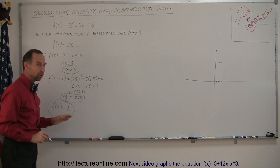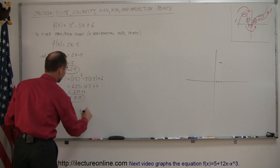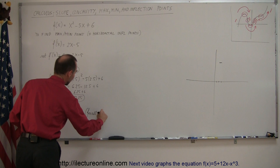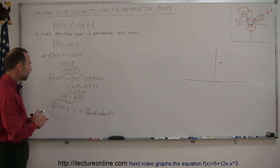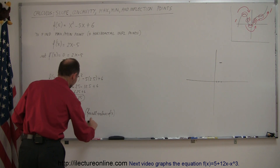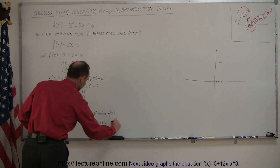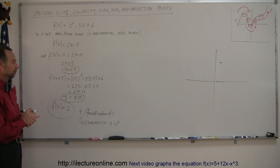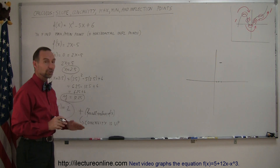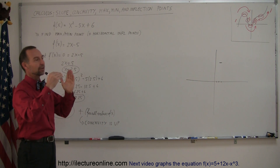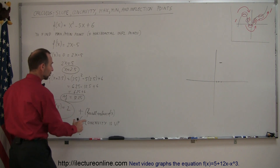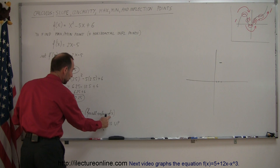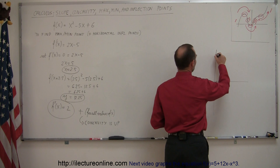The second derivative equals 2, which means it's positive for all values of x. If the second derivative is positive for all values of x, that means the concavity is positive — concavity is up. If the concavity is up at that location, then it's not an inflection point, because for an inflection point the concavity should be 0, at the boundary of concave up to concave down. Since the second derivative is not 0, it's not an inflection point — it must be a max or a min. Since the concavity is up, the function must curve upward.